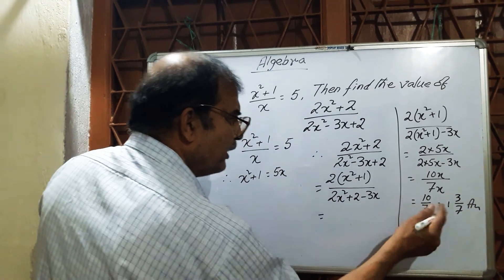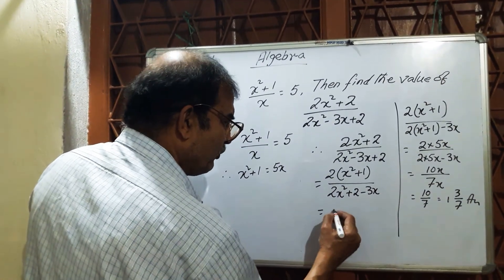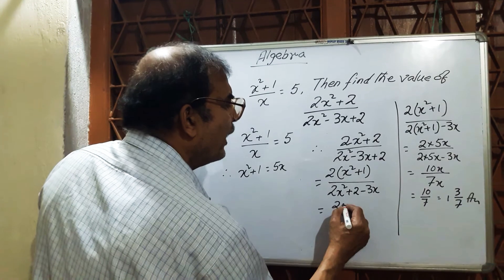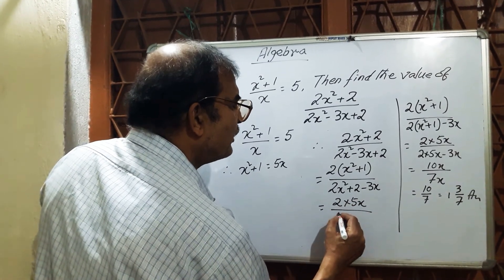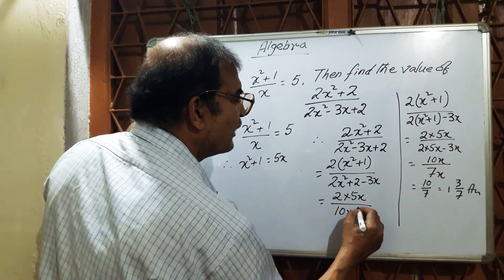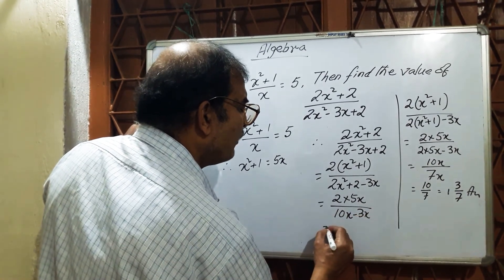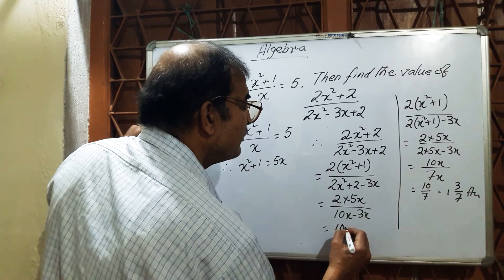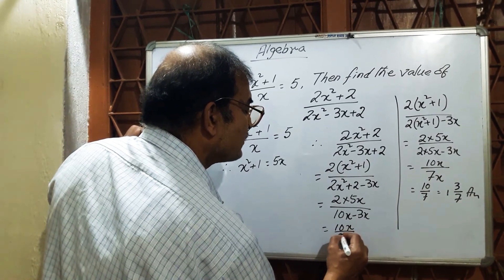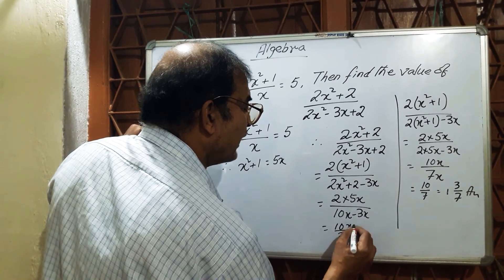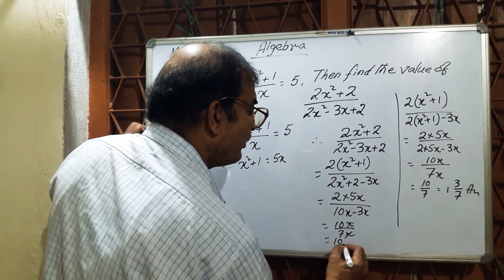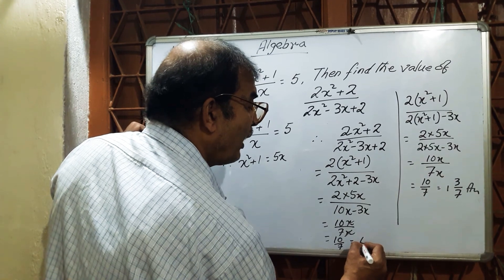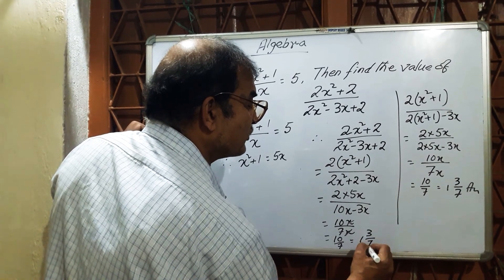It is rough, now do it fair here. 2(5x) divided by 2(5x) - 3x equals 10x by 7x. x cancels, therefore 10/7 = 1 and 3/7 is the answer. Thank you.